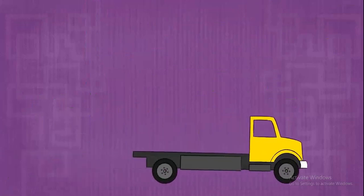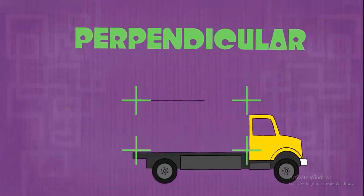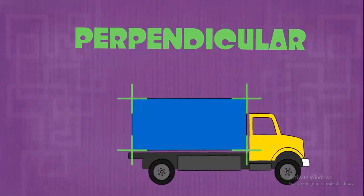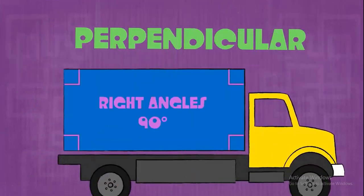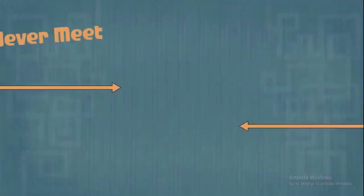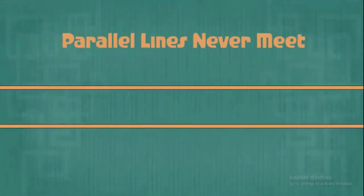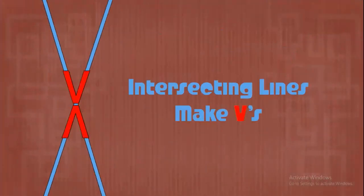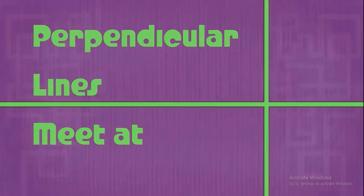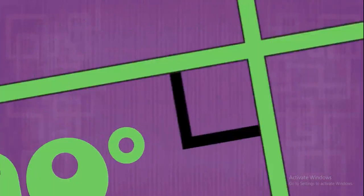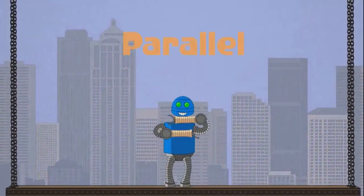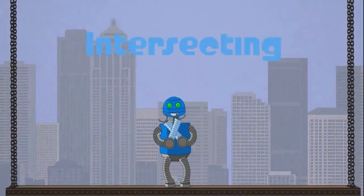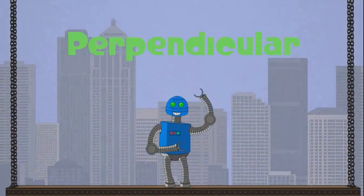You'll find lines that are perpendicular on the rectangle's perimeter. Let's break it down: parallel lines never meet, intersecting lines cross each other, and perpendicular lines meet at 90 degrees. Put your hands in the air with me: parallel, intersecting, parallel, intersecting, perpendicular.